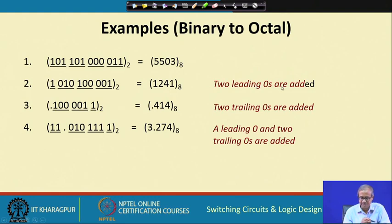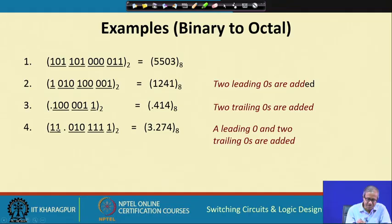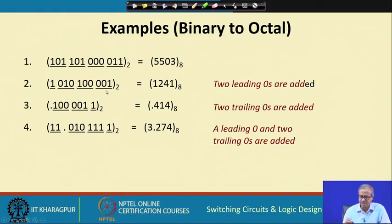For a pure fraction, scan from left to right: 100 = 4, 001 = 1, then a single 1 with two trailing zeros added becomes 100 = 4. For a mixed number, the integer part is scanned right to left and the fractional part left to right. A leading zero may be added for the integer part and trailing zeros for the fractional part. Binary to octal conversion is done in this straightforward way.